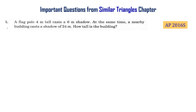A flagpole of 4 meters tall casts a shadow of 6 meters length. At the same time, a nearby building casts a shadow of 24 meters. How tall is the building?